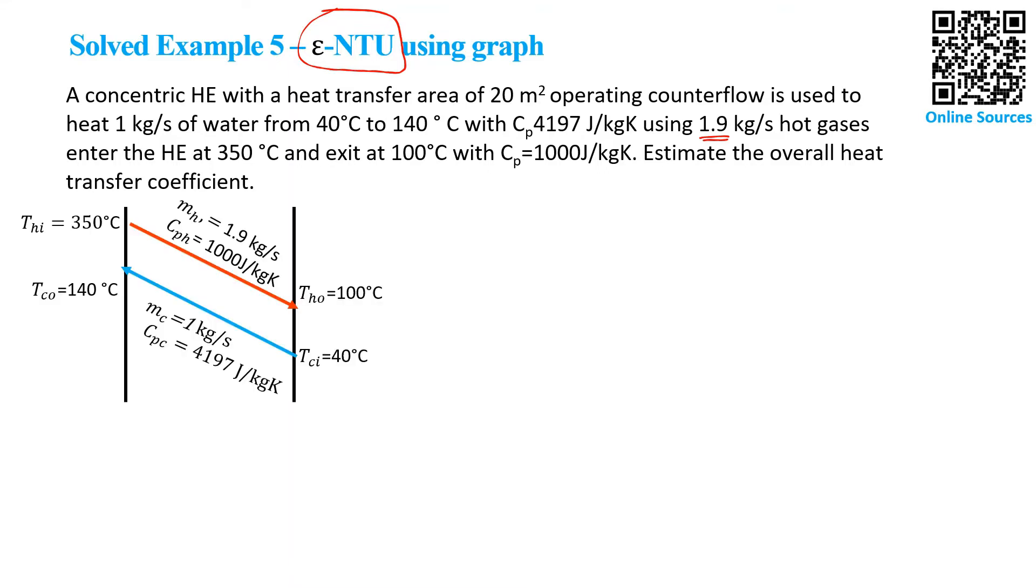I've prepared it here. From the given problem, we know that the T-hot in, this is hot gases, enters the heat exchanger at a temperature of 350°C and exits at 100°C. We are given the mass flow rate, which is 1.9 kg per second, and the Cp of the hot gas, 1 kJ per kilogram Kelvin.